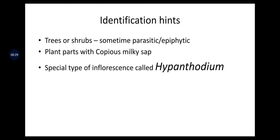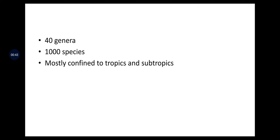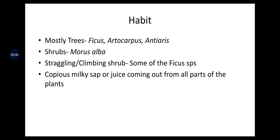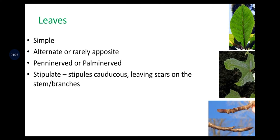Identification hints of the Moraceae family: plants are trees or shrubs, sometimes parasitic or epiphytic plants. Plant parts have copious milky sap, and a special type of inflorescence called hypanthodium. The family has 40 genera and about 1000 species, mostly confined to tropical and subtropical regions. Leaves are simple, alternate or rarely opposite, penninerved or palminerverd, stipulate, with stipules caducous, leaving scars on the stem or branches.